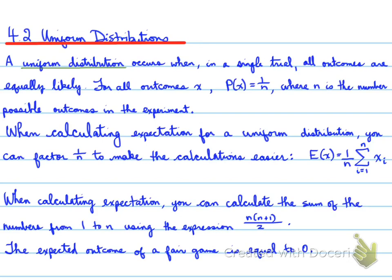For all outcomes x, P(x) is equal to 1 over n, where n is the number of possible outcomes in the experiment.